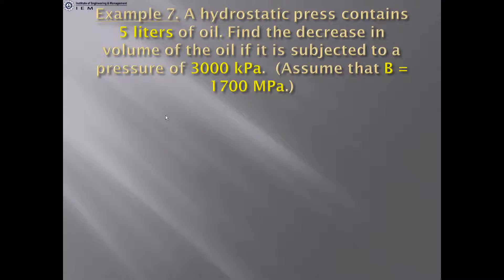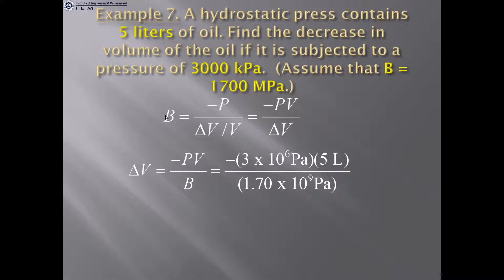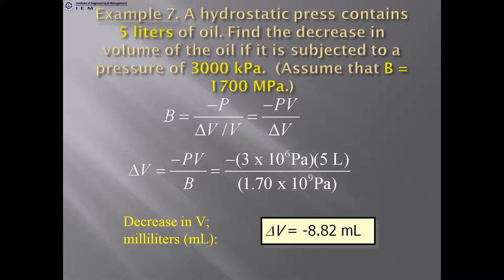Example: A hydrostatic press contains 5 liters of oil. Find the decrease in volume if subjected to a pressure of 3000 kPa, assuming B = 1700 MPa. Using ΔV = −PV/B and substituting all values, the decrease in volume is 8.82 mL.